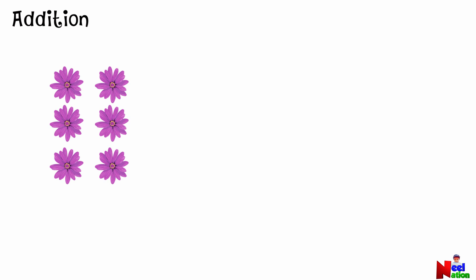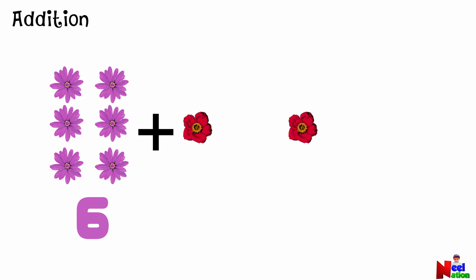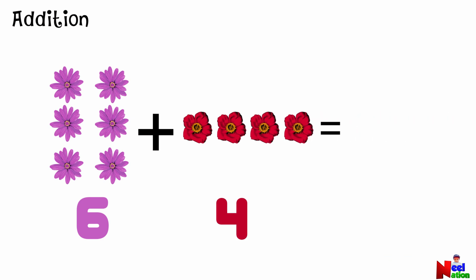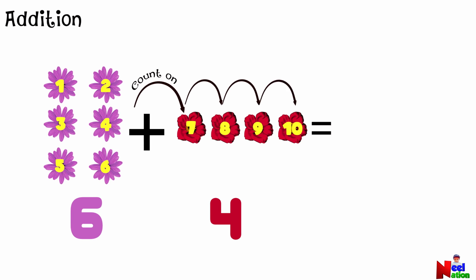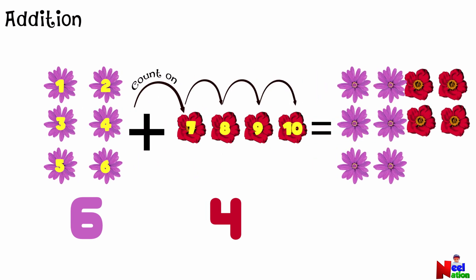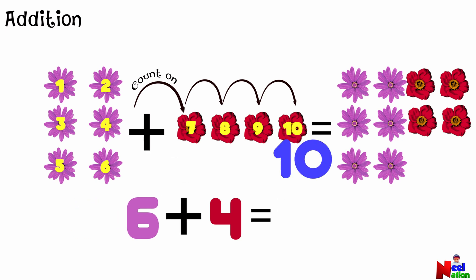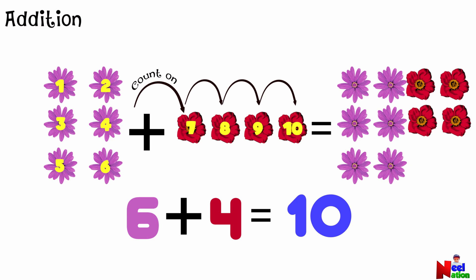Here, we have six flowers. Now watch as four more flowers join the group. So what is six plus four? To make it easier, let's do the counting on method. You start with six in your mind. Let's count on starting after six: seven, eight, nine, and then ten. So when we add four more to the six flowers, we keep counting on and reach ten. That means six plus four equals ten.